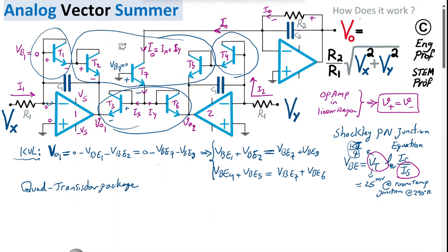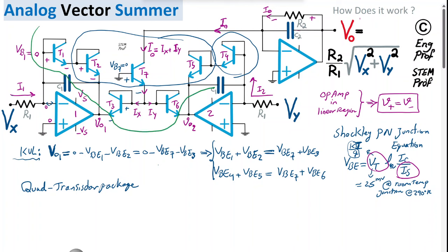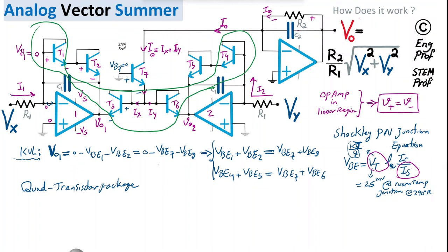With this two-package setup, we must be careful about transistor assignment. The green package contains four matched transistors and the blue package contains three matched transistors. The transistor grouping is highlighted in green and blue accordingly in the circuit diagram.